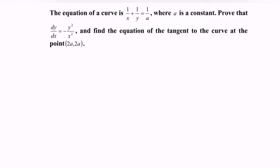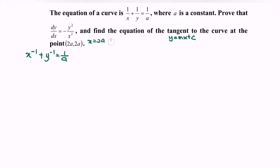Given the equation of a curve is 1 over x plus 1 over y equals 1 over a, which we can write as x to the power of negative 1 plus y to the power of negative 1 equals 1 over a, where a is a constant. We need to prove that the first derivative equals negative y squared over x squared. Then find the equation of the tangent — using y equals mx plus c, where m is the gradient and c is the intercept — to the curve at the point (2a, 2a).